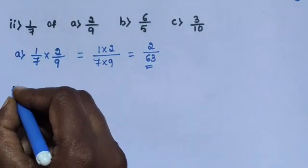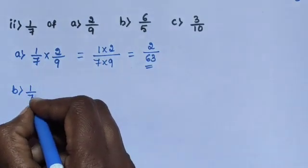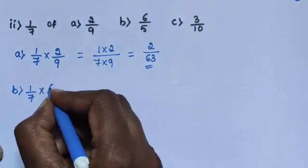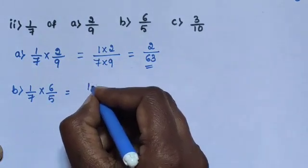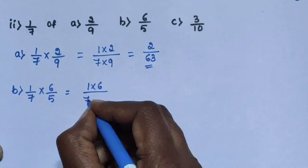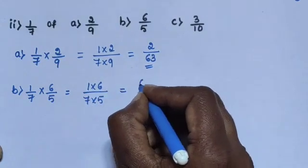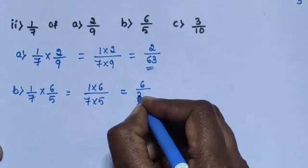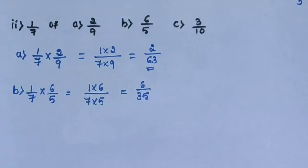Next, question B: 1/7 multiplied by 6/5 equals 1×6 divided by 7×5. 1 sixes are 6, 7 fives are 35. The answer is 6/35.